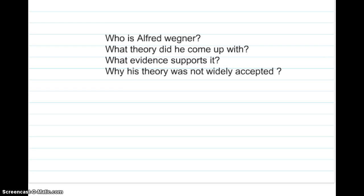So what you're going to need to know for class — in case you need to go back and review — you need to know who Alfred Wegener is, the theory that he came up with, what evidence was found to support it, and why his theory was not widely accepted. Make sure you have this information covered, and if you have any questions, write them down in the question portion of your Cornell notes so we can talk about it tomorrow in class. Go back and watch that Alfred Wegener song again — that was pretty funny. Bye!